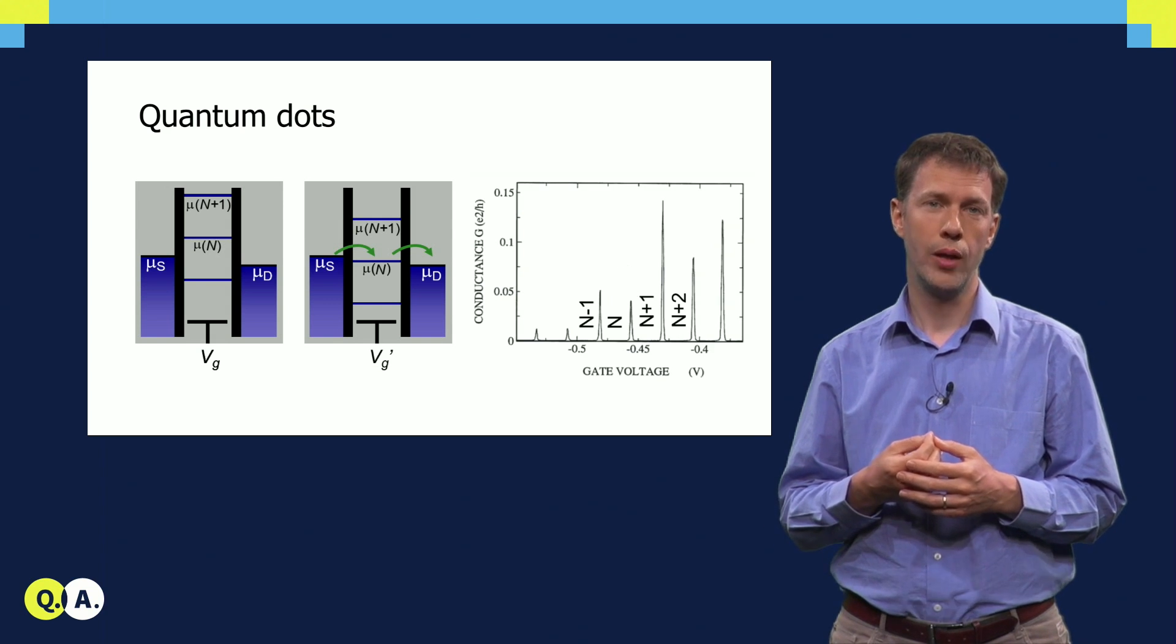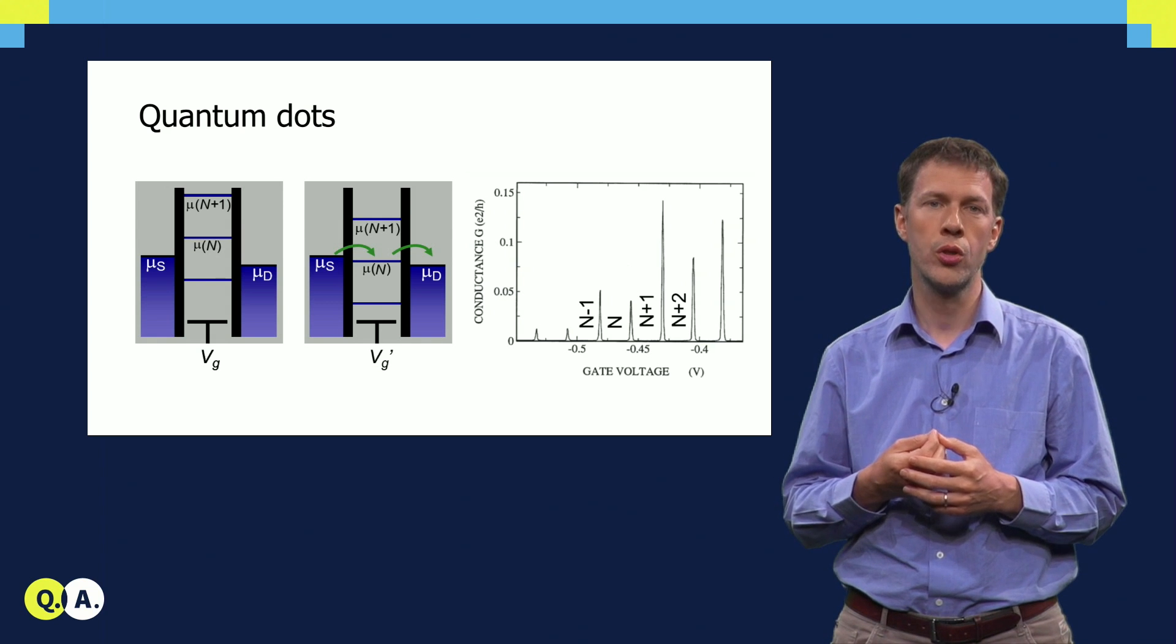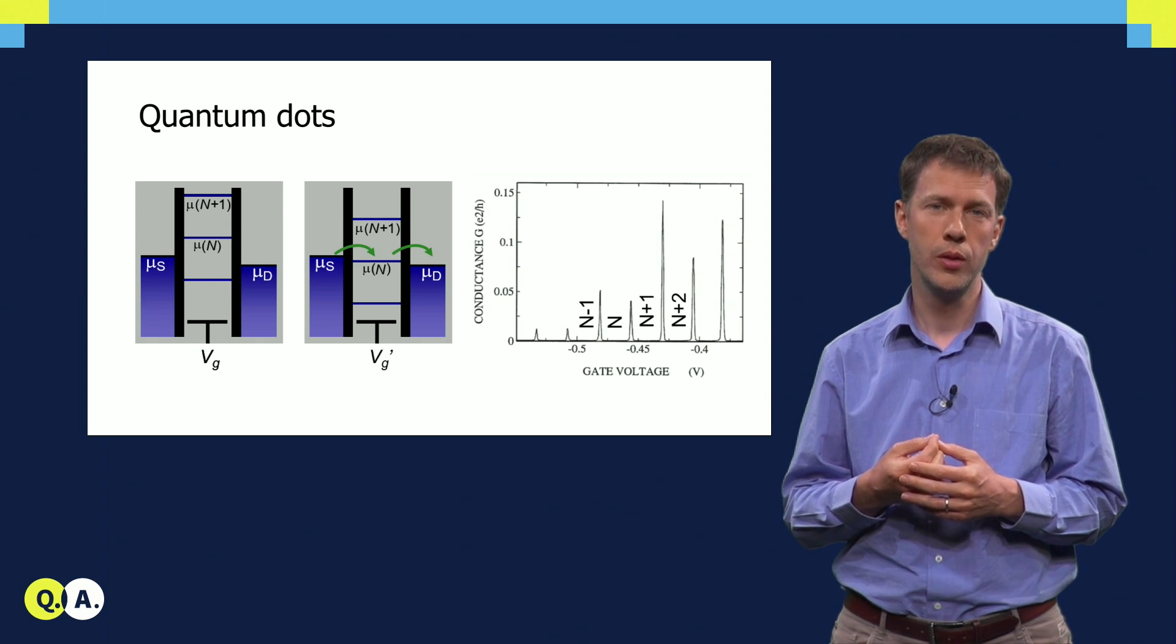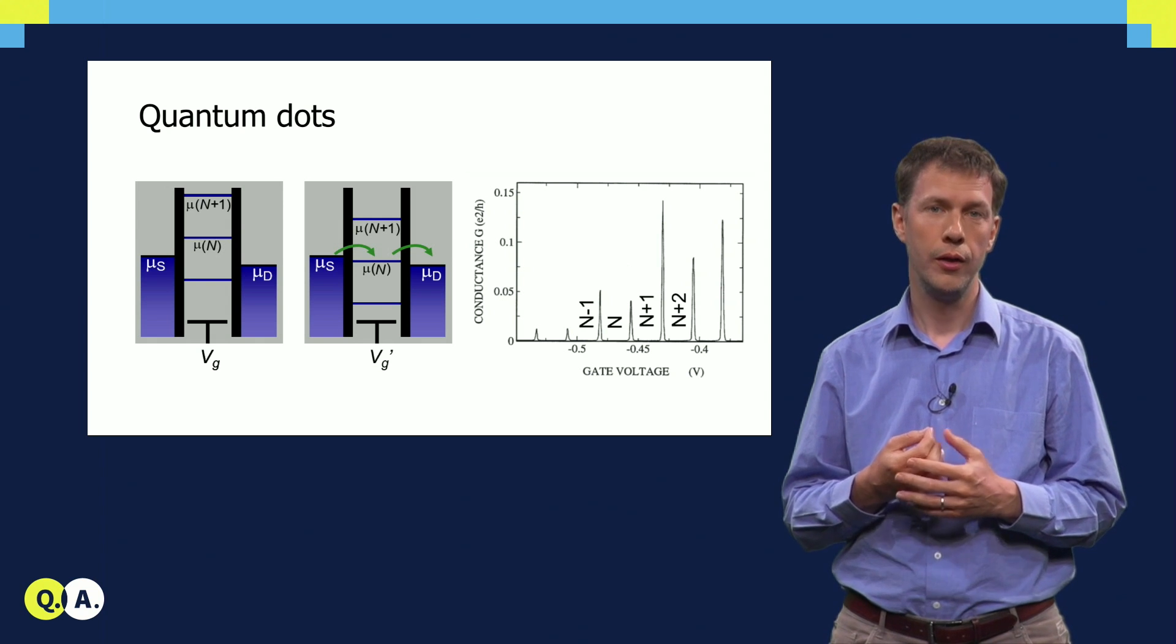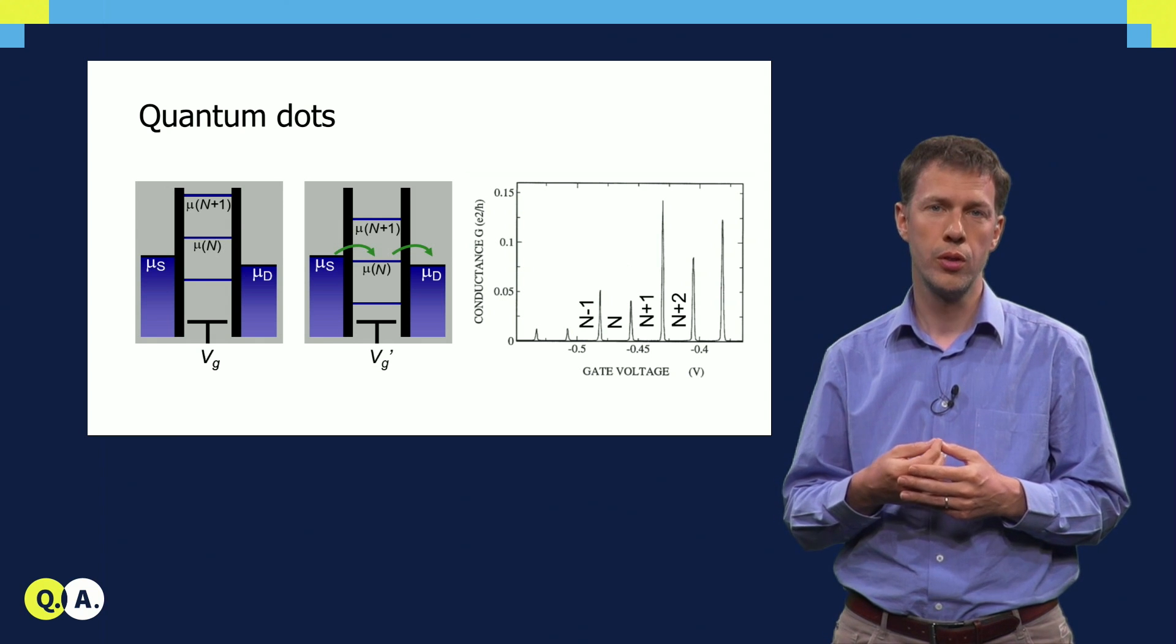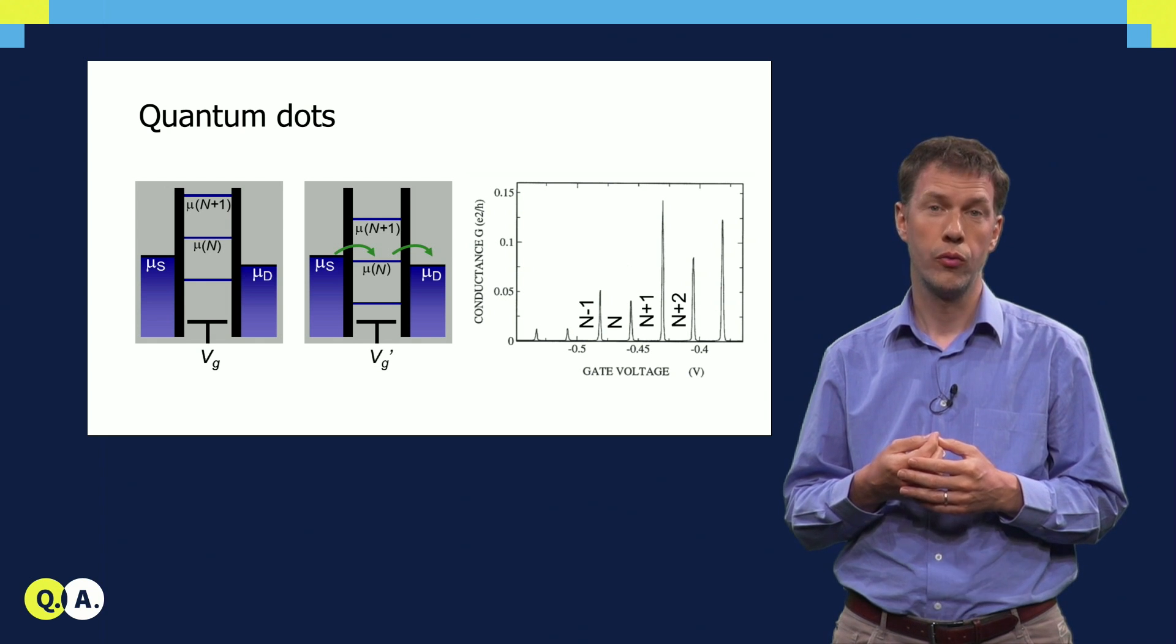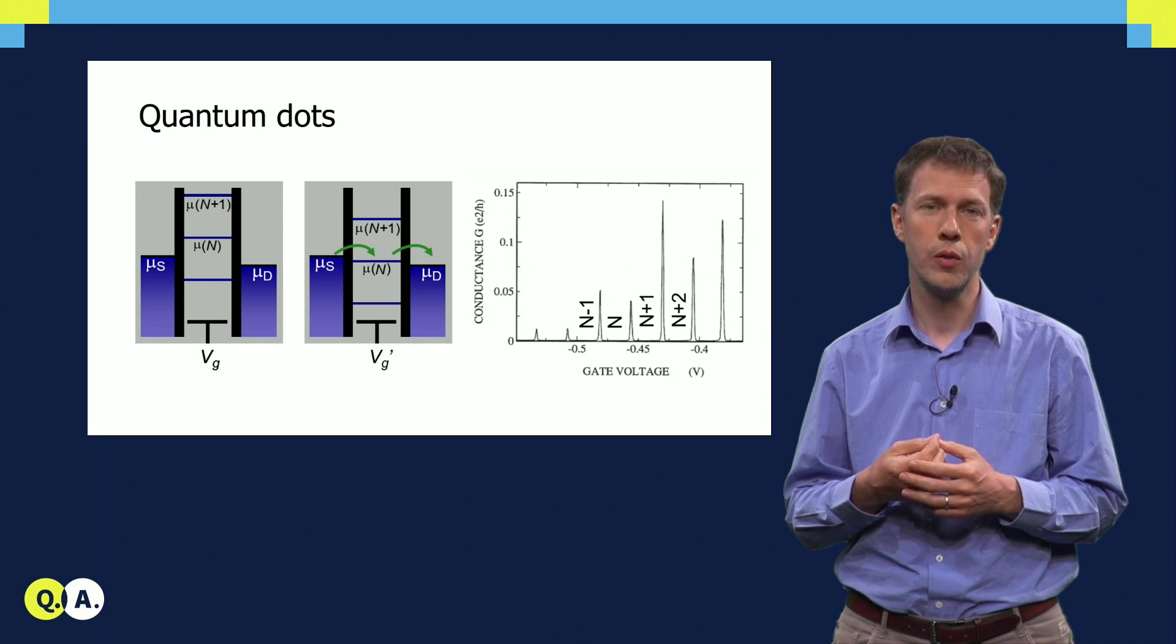The current flows whenever the electrochemical potential lies within this bias window between source and drain, and we see this beautifully in measurements as sharp peaks in the conductance, or current, through the quantum dot, for specific voltages, where we have reached an alignment as shown in the schematic on the right. And for the intermediate gate voltages, the current is blocked.